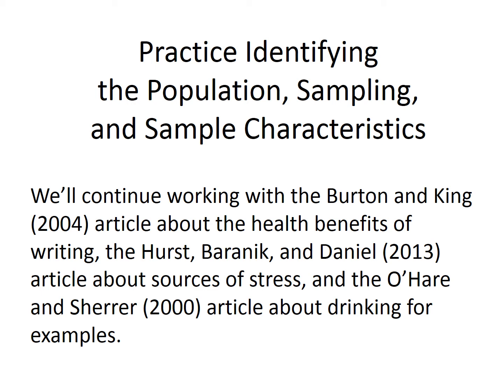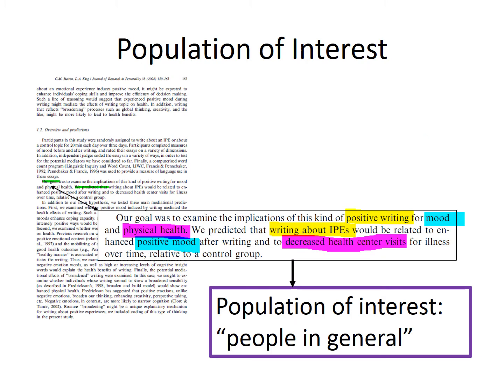The Burton and King article includes the participant section on page 154, or page 5 of the PDF. Authors don't always directly tell us the population of interest, so we often need to make an educated guess given what we learned about the purpose of the research. We already have the information about the focus in the worksheet, as taken from the article. It doesn't say anything really specific about who they're interested in learning about, so we would assume that their population of interest was people in general.